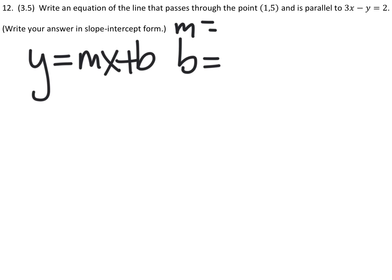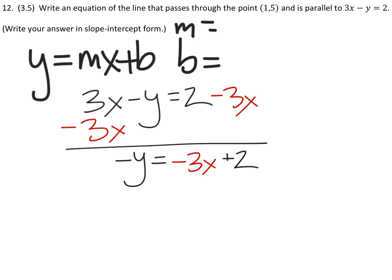How do we figure out the slope of our equation 3x minus y equals 2? Well, there's a couple ways we can do this. The first way is to rewrite that equation in slope-intercept form. So there's the equation, and what we'll want to do is isolate the y on one side of the equal sign. What this means is we're going to have to subtract 3x from both sides like this.